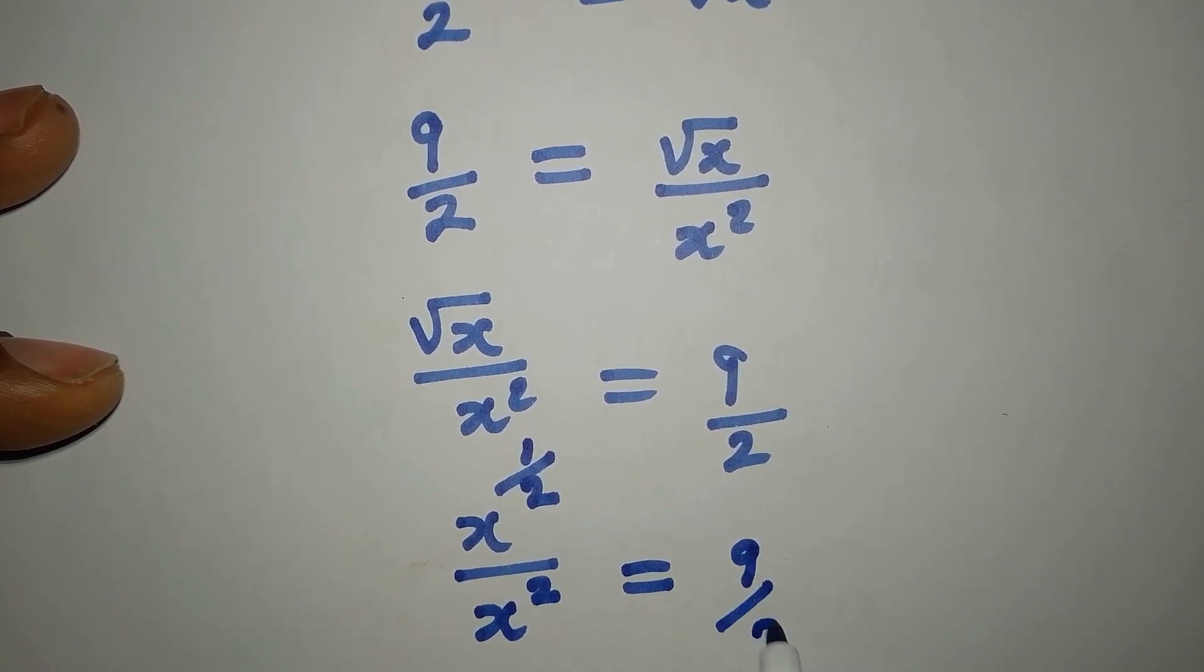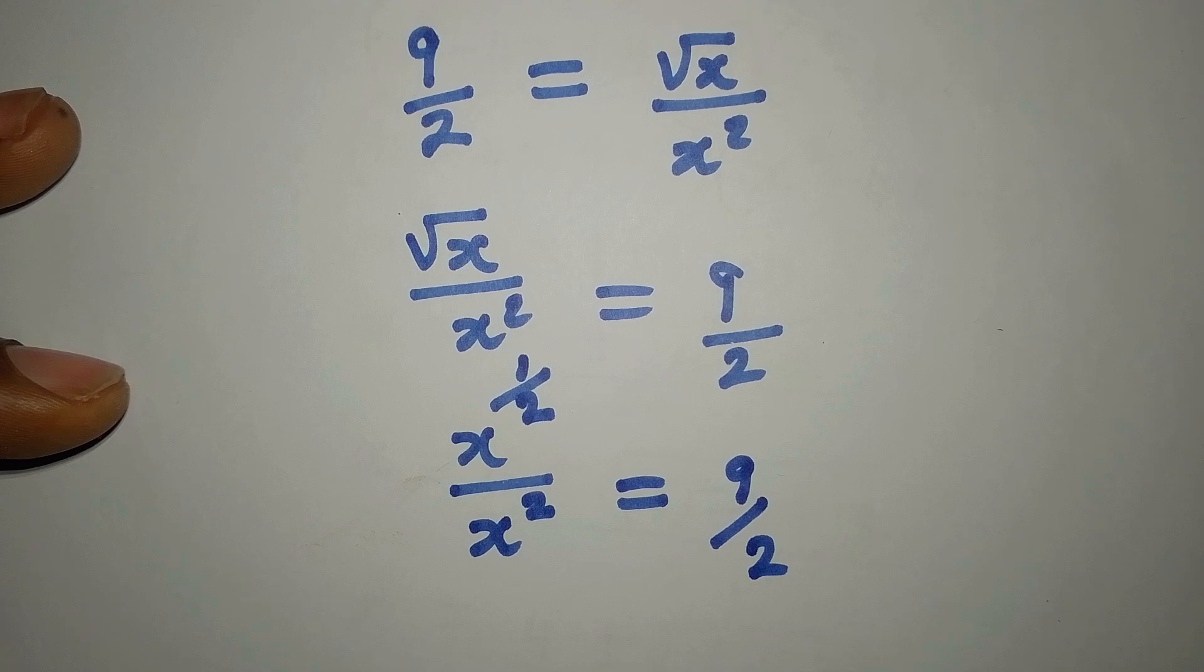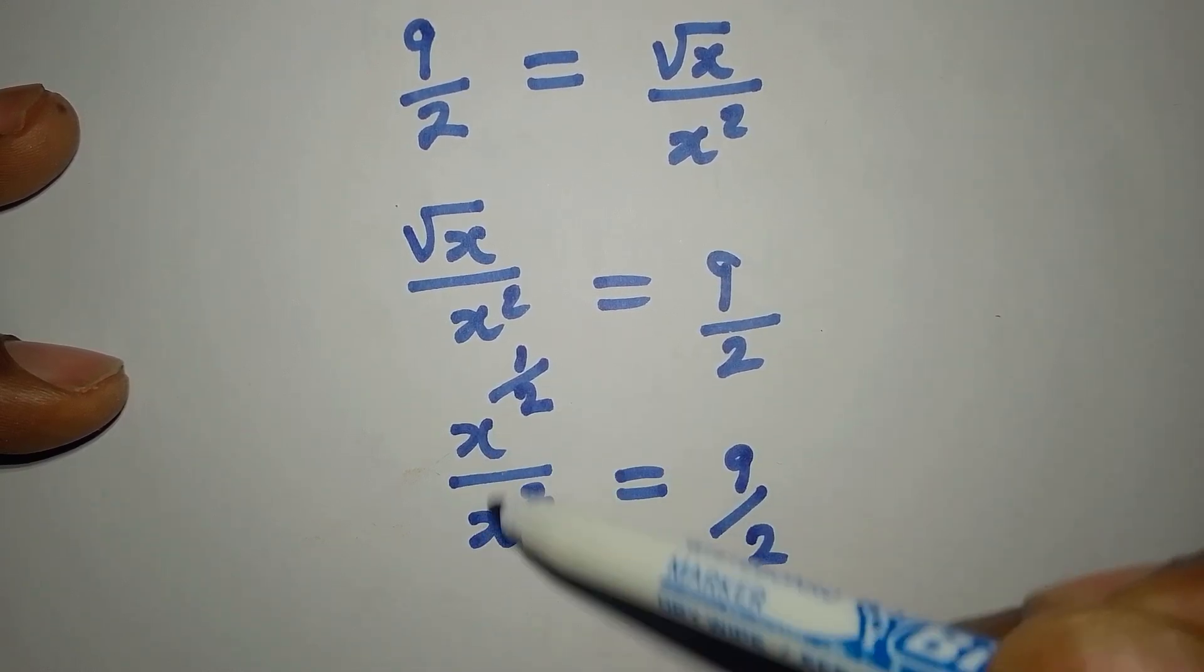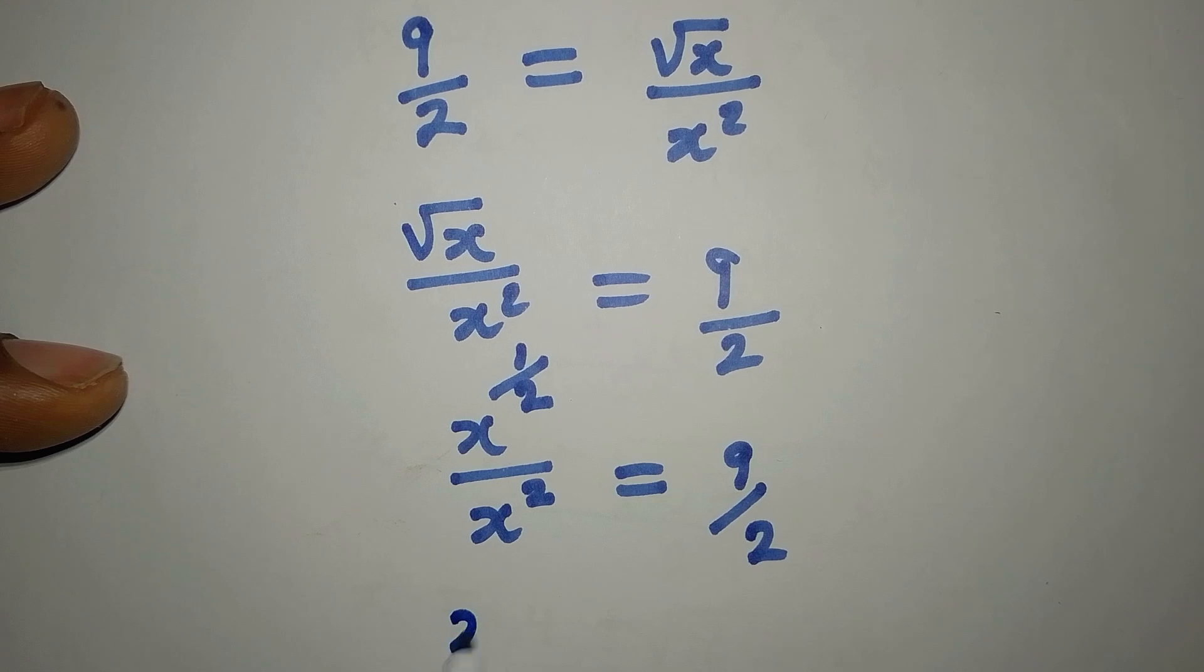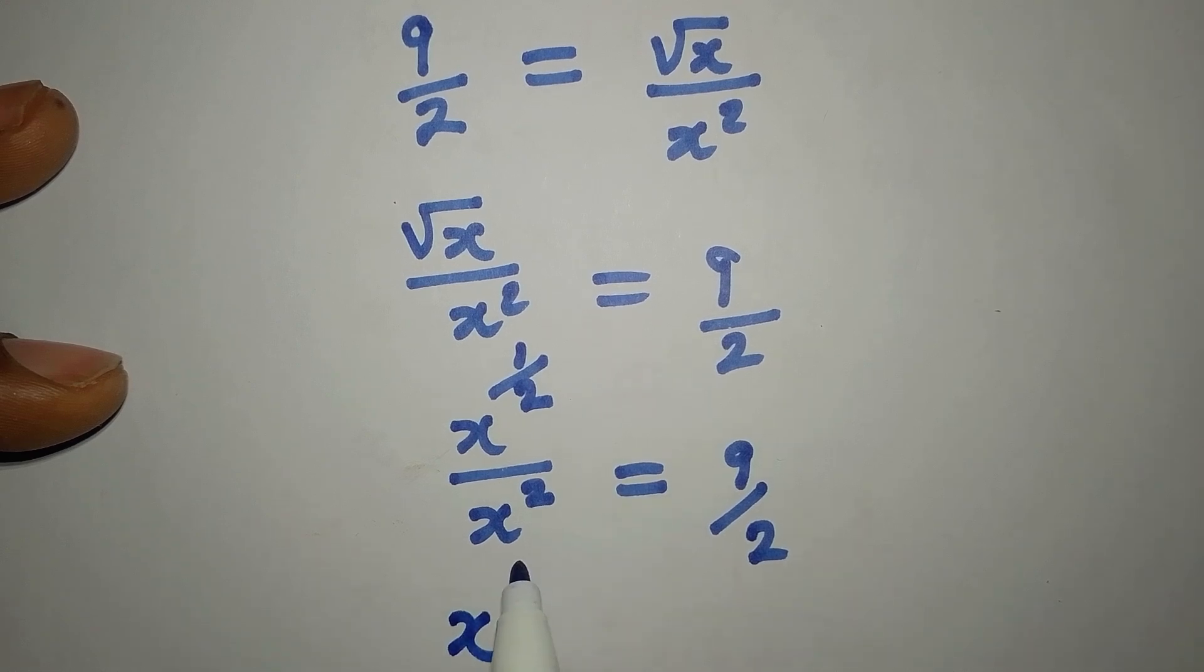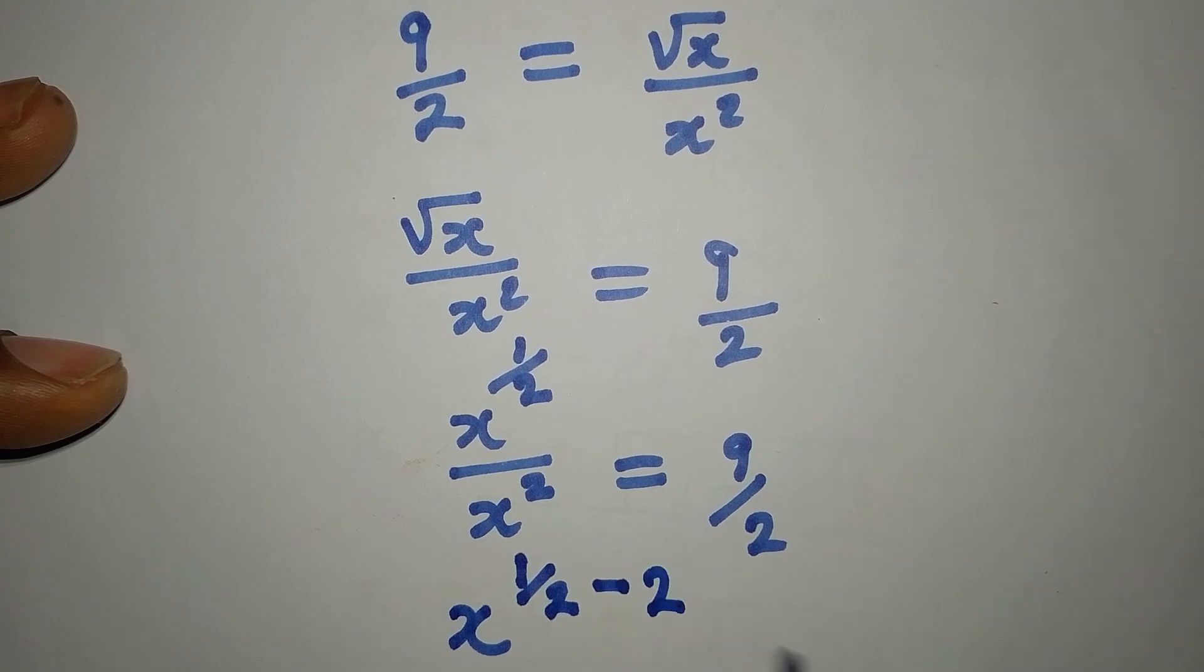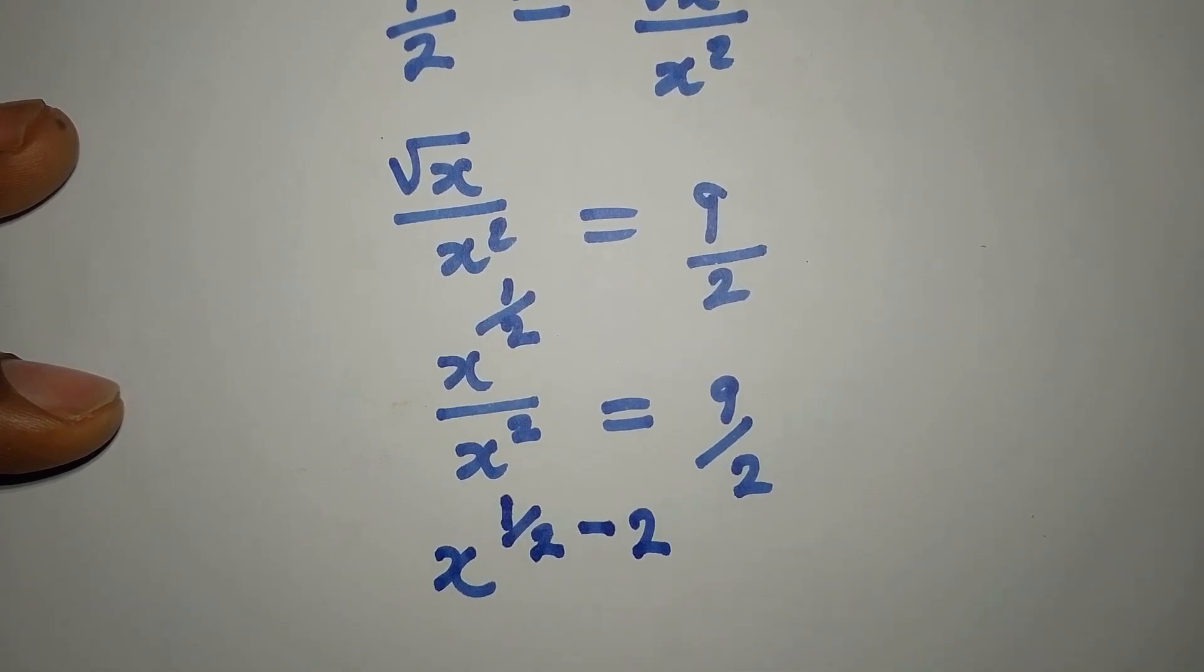Now what do I want to do? According to one of the laws of indices, the bases are the same, so I'm going to pick x, then the power will be subtracted: 1/2 minus 2. I did that because